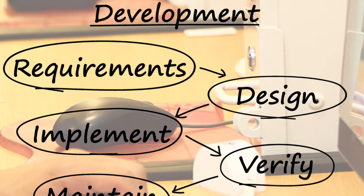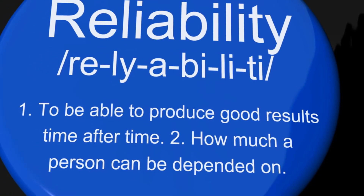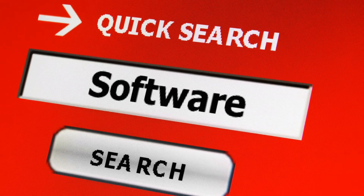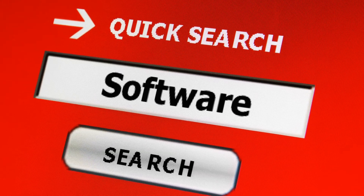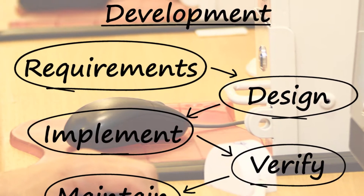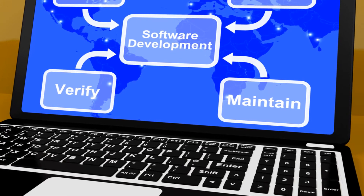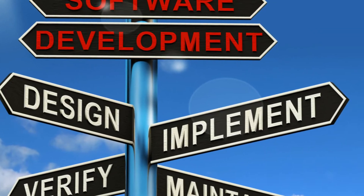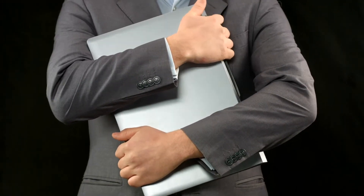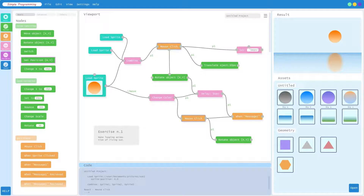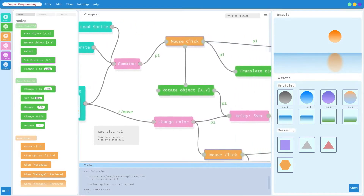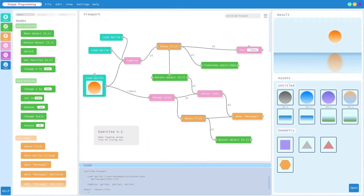First up, we have functional suitability — all about how well a software performs its intended functions. Next, there's reliability, which measures how dependable a software product is and how well it maintains its performance under specified conditions. Then we have usability, which refers to how user-friendly and easy to understand the software is. Following this, we have efficiency, about the software's capability to provide appropriate performance relative to resources used. Next in line is maintainability — how easy it is to identify and fix issues. Then portability, the software's ability to transfer from one environment to another. Our seventh characteristic, compatibility, measures how well the software coexists with other systems. And our final characteristic, security, is about protecting information and data from unauthorized access.